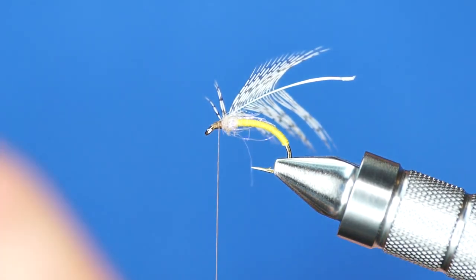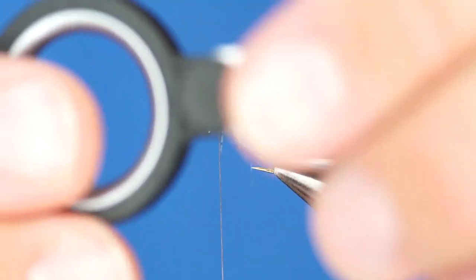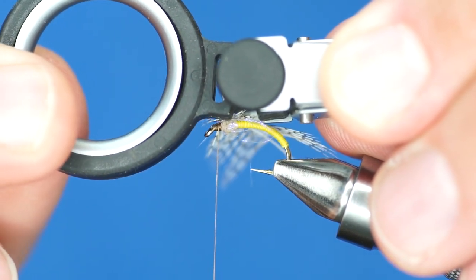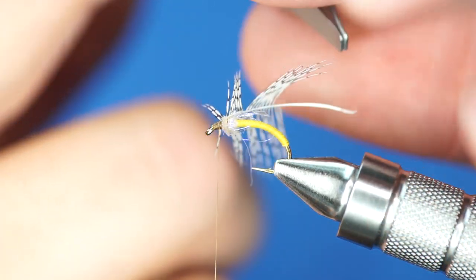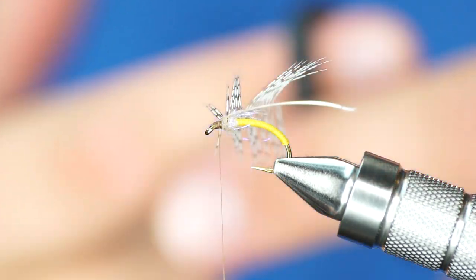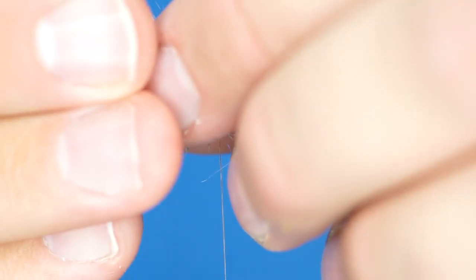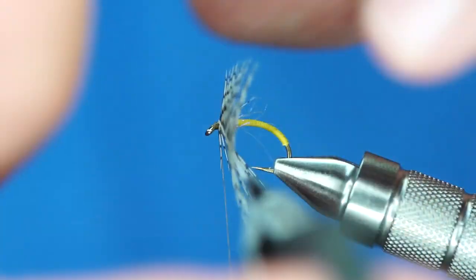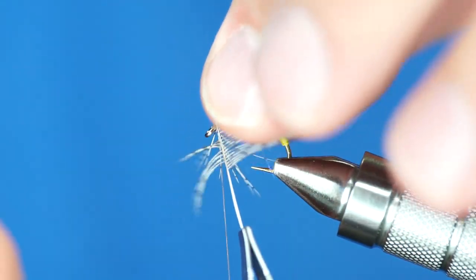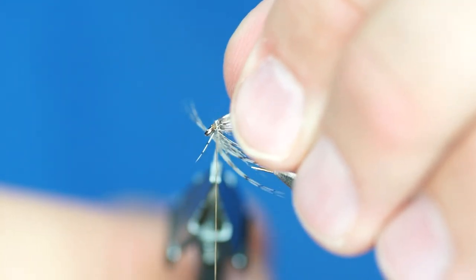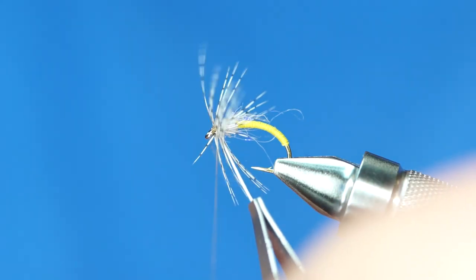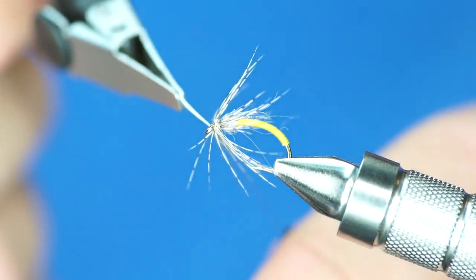So we're ready to wrap. Now these hackle pliers are cool because they've got a little spring, a little bit of rubber right here, so if you pull it too hard, there's a little bit of give. And then it's got a steel or aluminum center ring that allows you to use your finger to turn the hackle onto the hook. I'll grab that and just preen the hackles back as you wrap it forward.